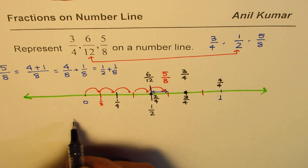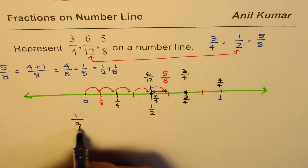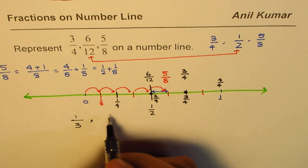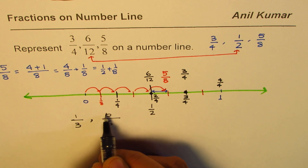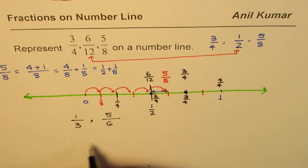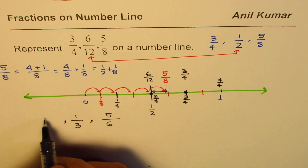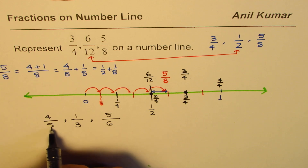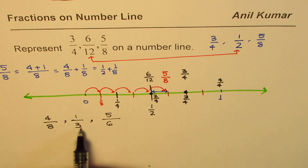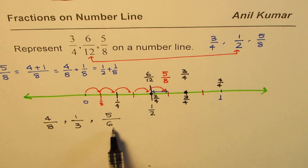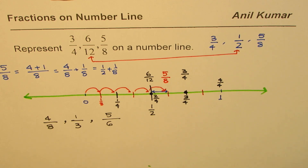Here is a practice question: represent 1/3, 5/6, and 4/8 on a number line. You can divide into 3 portions or 6 portions. Note that 4/8 simplifies to half. Sometimes starting from half and working outward is quicker than dividing into 8 equal parts directly. Sketch a number line and try it yourself.